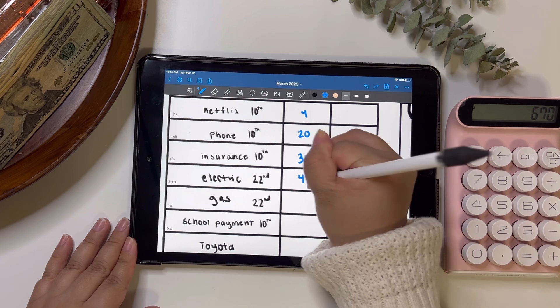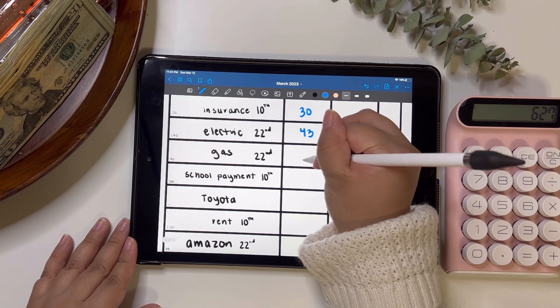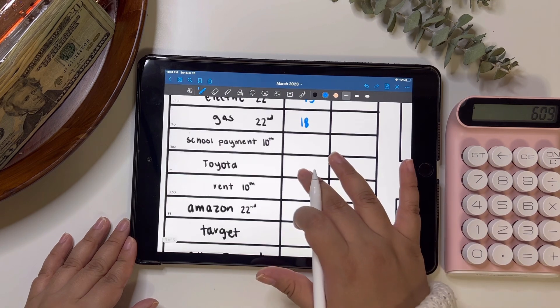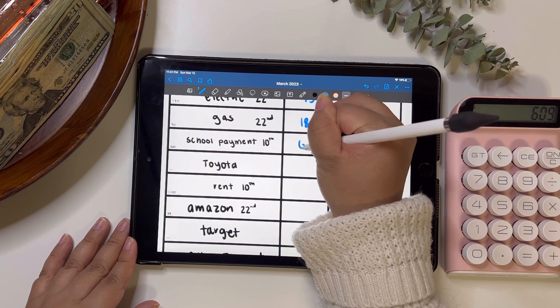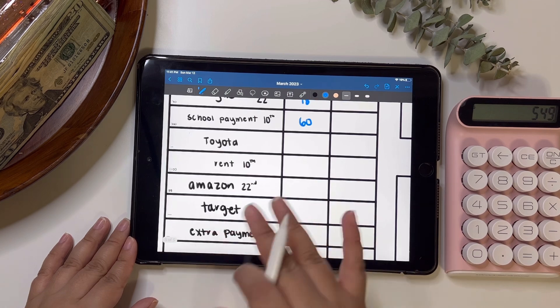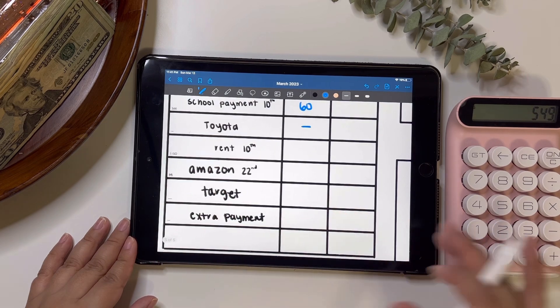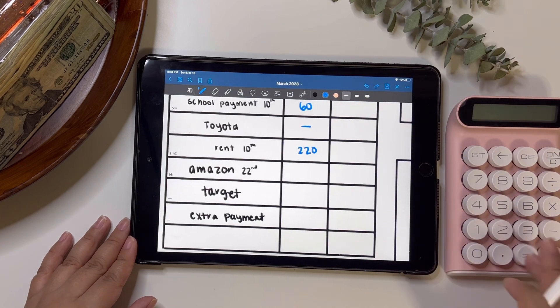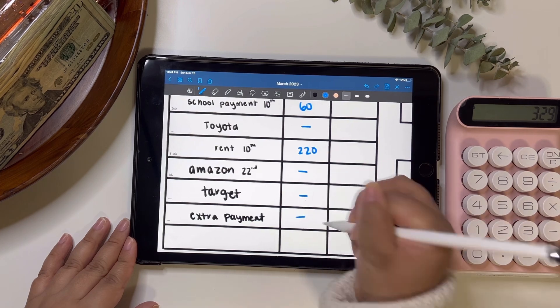So electric will be getting $43. And then same thing with gas, it's going to be getting $18 because I have it on the high end of $70. And then my student loan payment, same thing $300 every single month. So that's $60 every week. And then Toyota, this is for my husband's car, which is not yet. So it won't be getting stuffed. And then rent is $1,100. So then that comes out to $220 per week. And then Amazon is not getting anything. Target is not getting anything. And neither is extra payment.